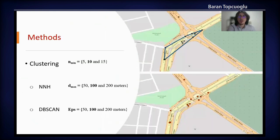After organizing the data, hotspots were identified using NNH and DBSCAN methods as mentioned. For NNH clustering, CrimeStat 3 program was used, and QGIS was used in DBSCAN analysis, visualization, and evaluation processes.